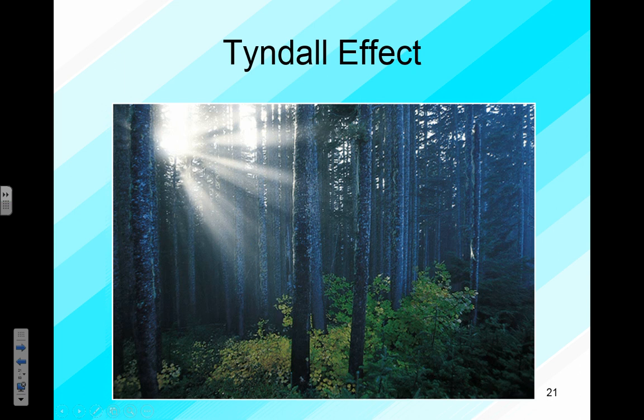You won't see the light in between unless there are particles suspended in the air that allow us to see the beams as they move through. Moving through a forest, there are tiny suspended particles of dirt, pollen, and other things in the air. As light moves through, you can actually see the beams because those large particles scatter the light — they're only suspended until they fall to the forest floor.